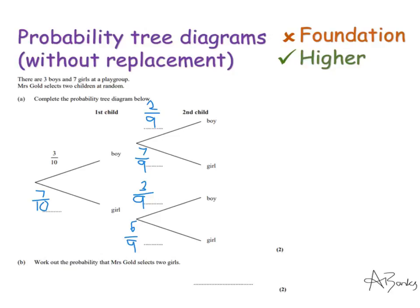The second part asks: work out the probability that Mrs Gold selects two girls. We want a girl on the first pick and a girl on the second pick — that's seven tenths and six ninths. When we say 'and' with probability, we multiply. So I multiply seven tenths by six ninths: multiply the numerators, multiply the denominators. There's no need to simplify unless they ask, which they very rarely do, as they're more interested in you knowing how to work with probability.